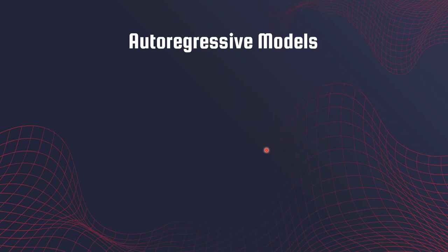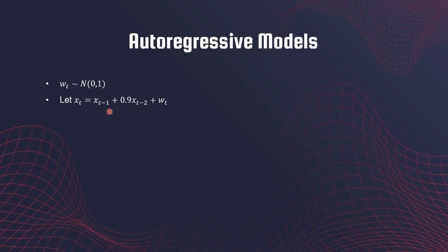Let's visualize the autoregressive model. I'm going to generate a model where WT is normally distributed with mean zero and variance one, and it's going to be an autoregressive process of order two. XT depends on the past two values and WT is the error term. You can use the filter function from R to generate autoregressive models.